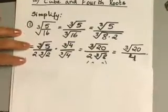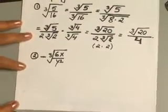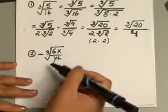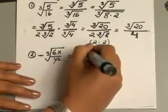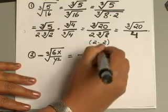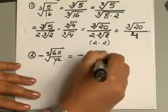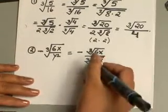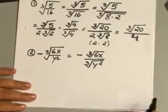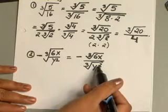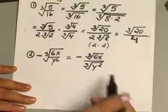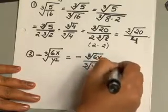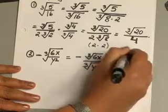Let's look at another example with a cube root. This time you have negative cube root of 6x over y squared. Start by applying the quotient rule, and you'll end up with negative cube root of 6x over cube root of y squared. You have cube root of y squared in your denominator and you're trying to rationalize it, which means we need at least a third power. Since you have y to the second, taking one more y gives y to the third, so we multiply by only cube root of y.